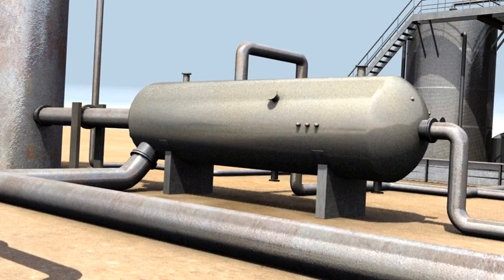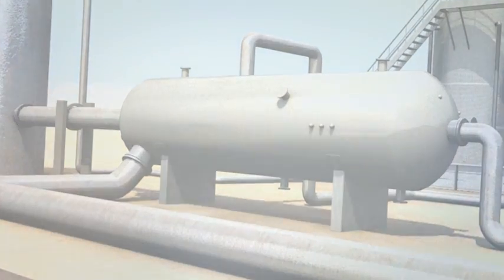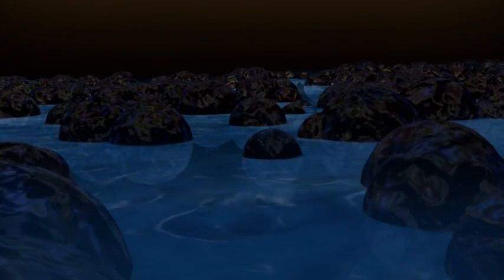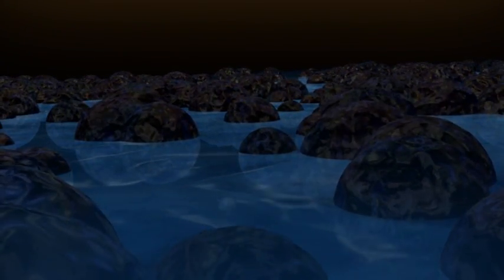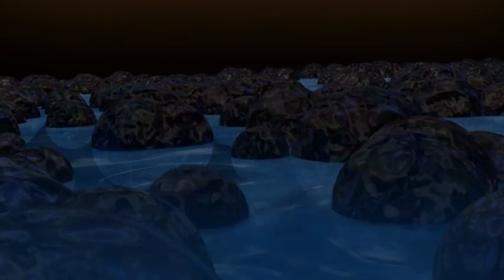As the production fluid flows out of the well and into the free water knockout, the oil-wet iron sulfide can cause a pad layer between the oil layer and water layer. During production, this pad layer can grow and flow over, resulting in a contaminated oil tank.